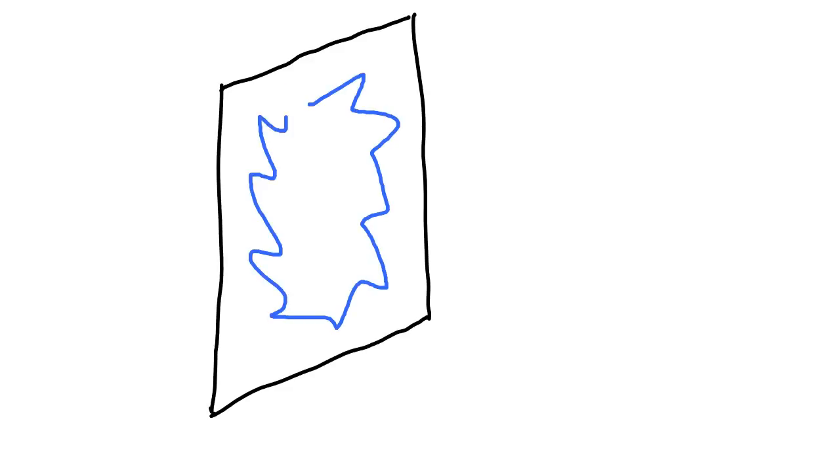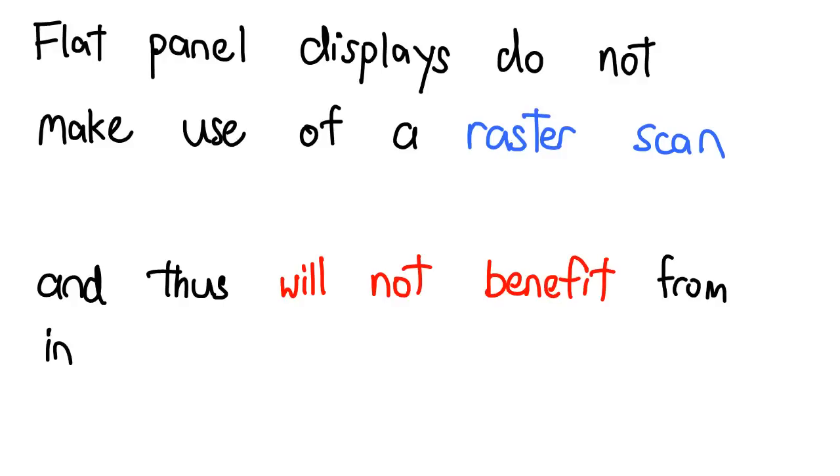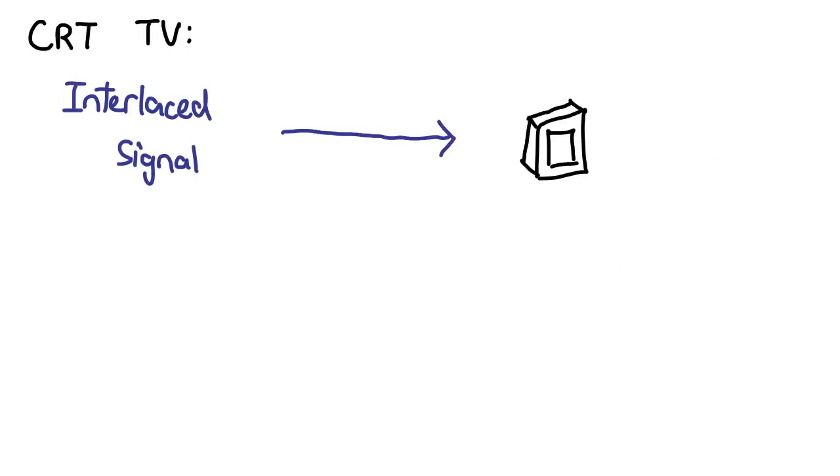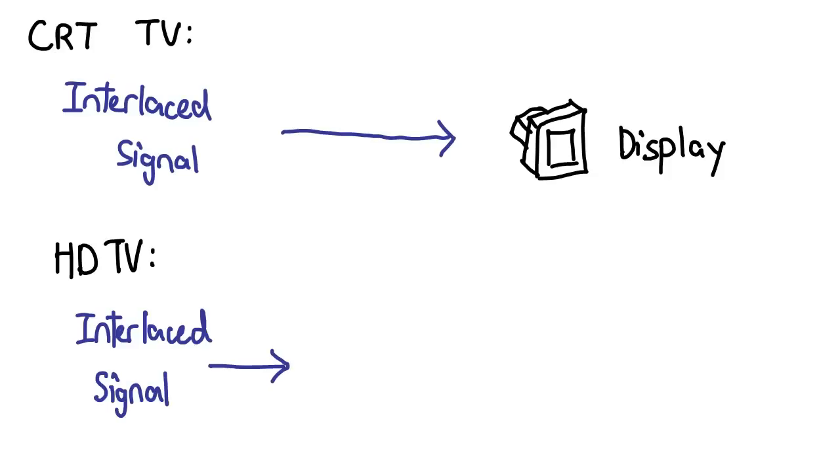You see, when we threw out CRTs, we also threw out the concept of a scanning electron gun. Flat panel displays don't work the same way. Since they do not operate by scanning, they cannot benefit from the interlaced format. In fact, flat panel TVs receiving an interlaced signal must first de-interlace it before it can be used.